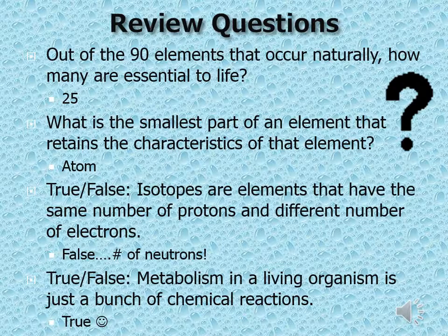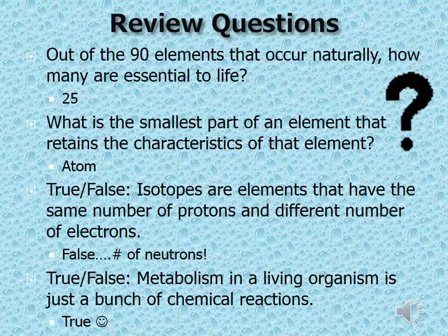Review: Out of the 90 elements that occur naturally, 25 are essential to life. The smallest part of an element that retains the characteristics of that element is the atom. False — isotopes have the same number of protons but a different number of neutrons, not electrons. Metabolism in a living organism is just a bunch of chemical reactions — that is true.